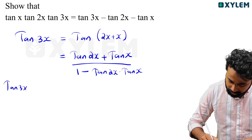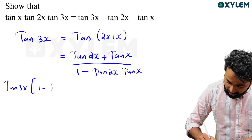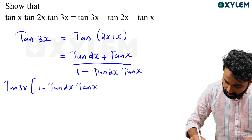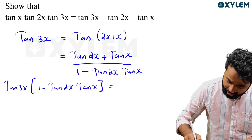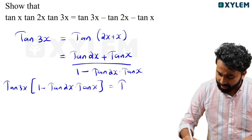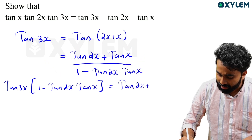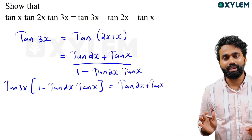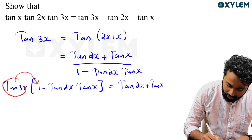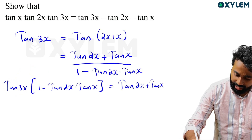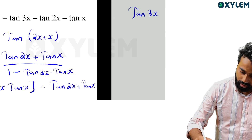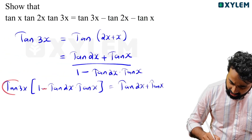tan x plus tan x plus tan x is equal to tan x, and tan x is equal to tan x. So if we take the model only, it is equal to tan 3x.